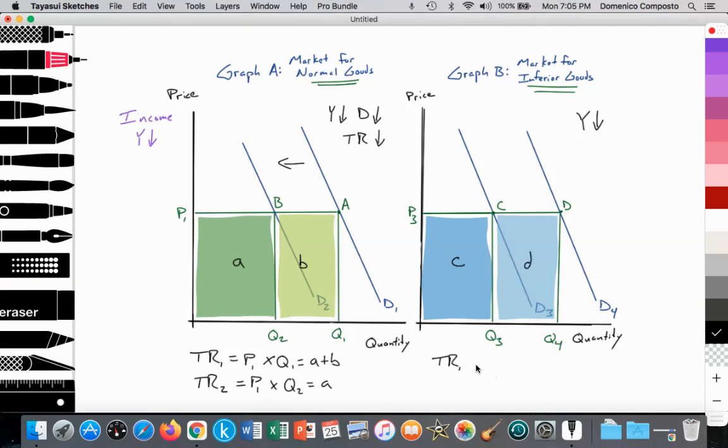Here we see total revenue was originally price of P3 multiplied by quantity demanded at Q4, which is equal to areas C plus D. But then as the demand curve... that's incorrect. Let me go ahead and correct that. All right. We're at D3 originally. So P3 times Q3, which is equal to area C. Then as the demand for the inferior goods rises, total revenue increases to P3 times an increased quantity of consumption at Q4 equals areas C plus D.